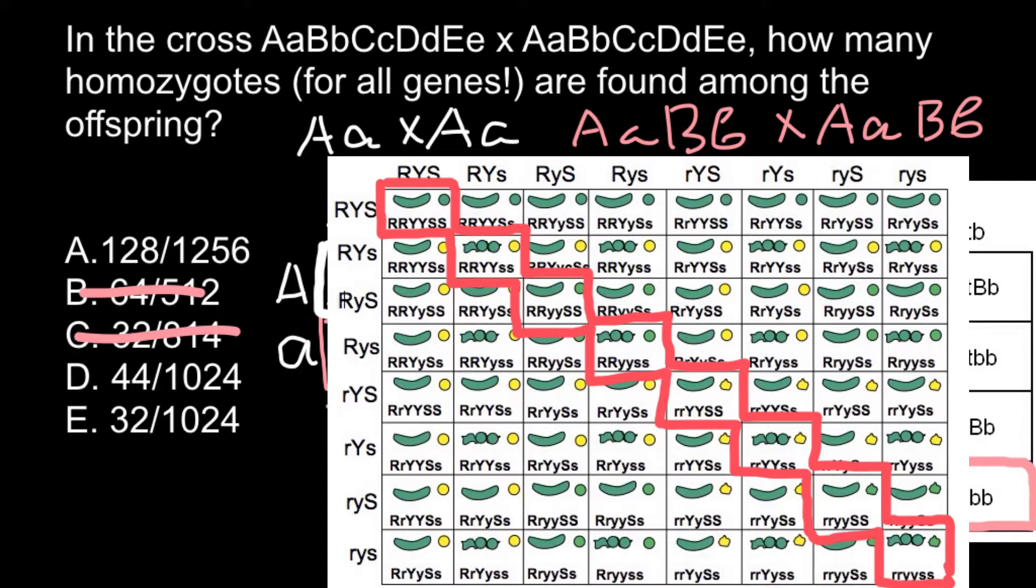Now when we know that our Punnett square is going to be 32 by 32, that means we are going to have on the diagonal also 32 squares. So 32 genotypes that would be homozygous—whether homozygous dominant or homozygous recessive—for all five genes. As you see, the correct answer is answer E: 32 out of 1,024.